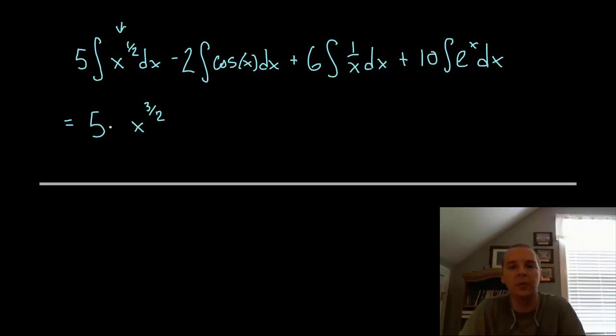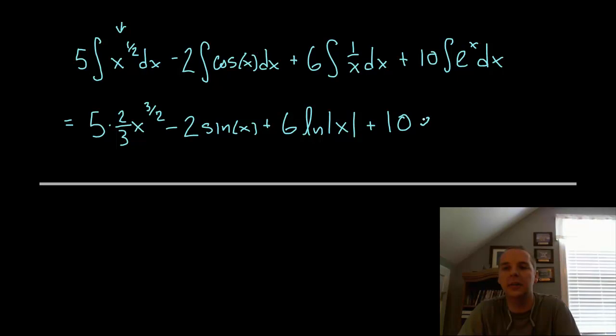Minus 2 sine x, integral of cosine is sine, plus 6 integral of 1 over x is natural log of the absolute value of x plus 10 integral of e to the x dx is e to the x plus c.